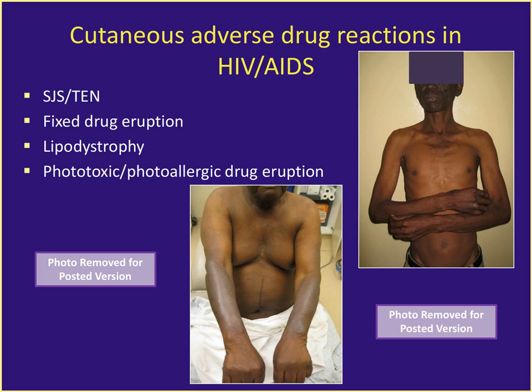Photoallergic and phototoxic drug reactions — sulfa agents are a major culprit. This is very hard to see when the patient's shirt is on. You need to take the shirt off to see that it's only the dorsal forearms, with a sharp cutoff at the sleeve line and shirt line. In the shadowed areas under the chin and under the palpebrae, there is no rash. It's been postulated that the virus itself might be a chromophore, absorbing UVB light and releasing energy that can damage DNA and cause an immune response.